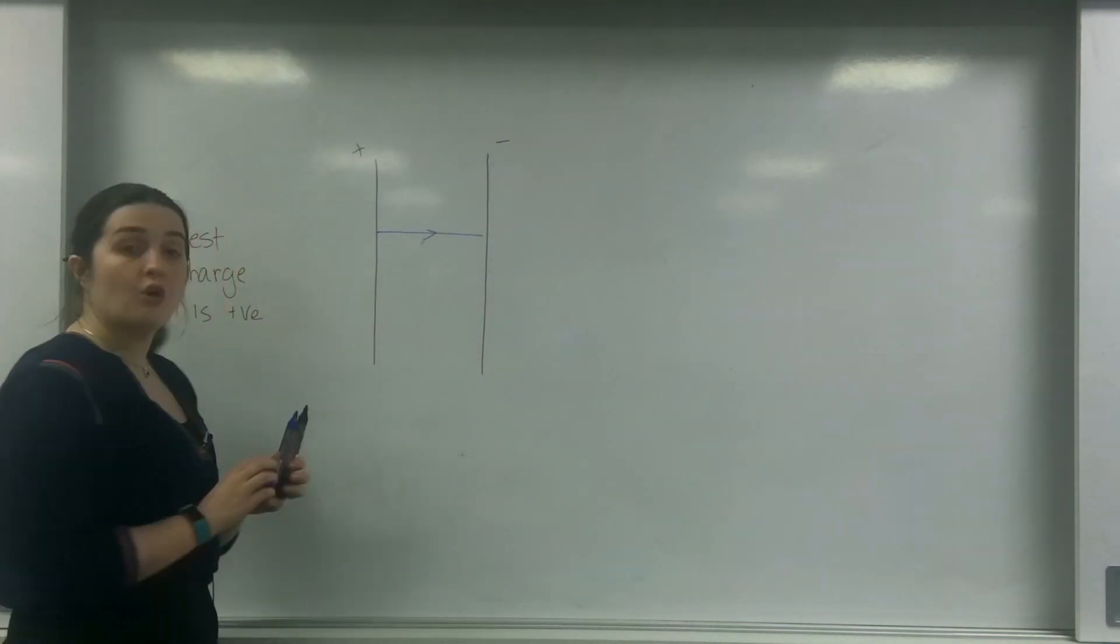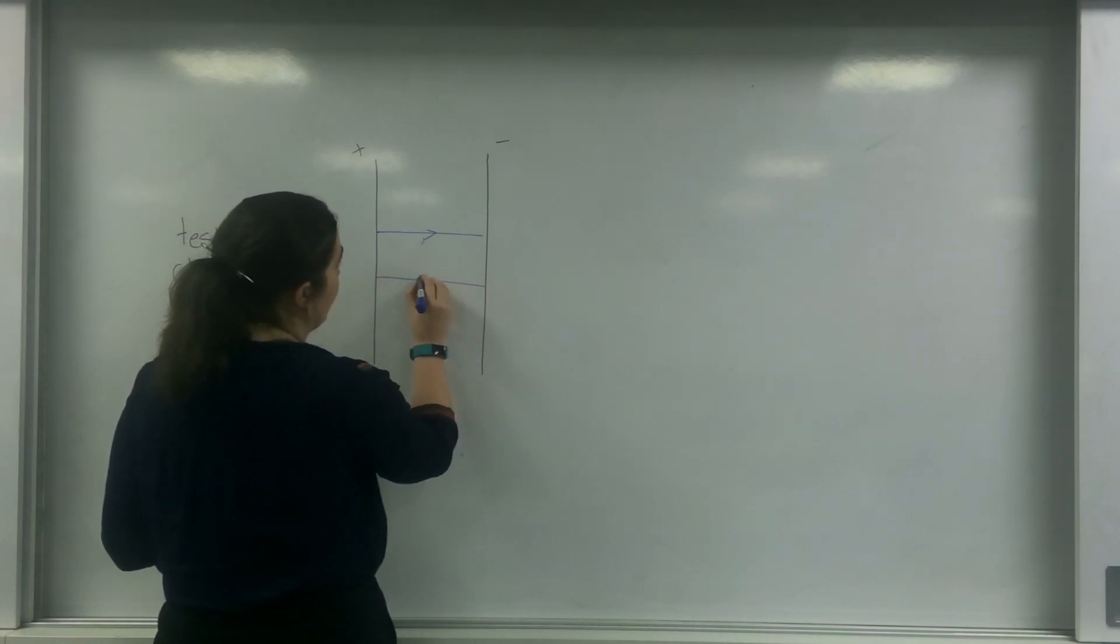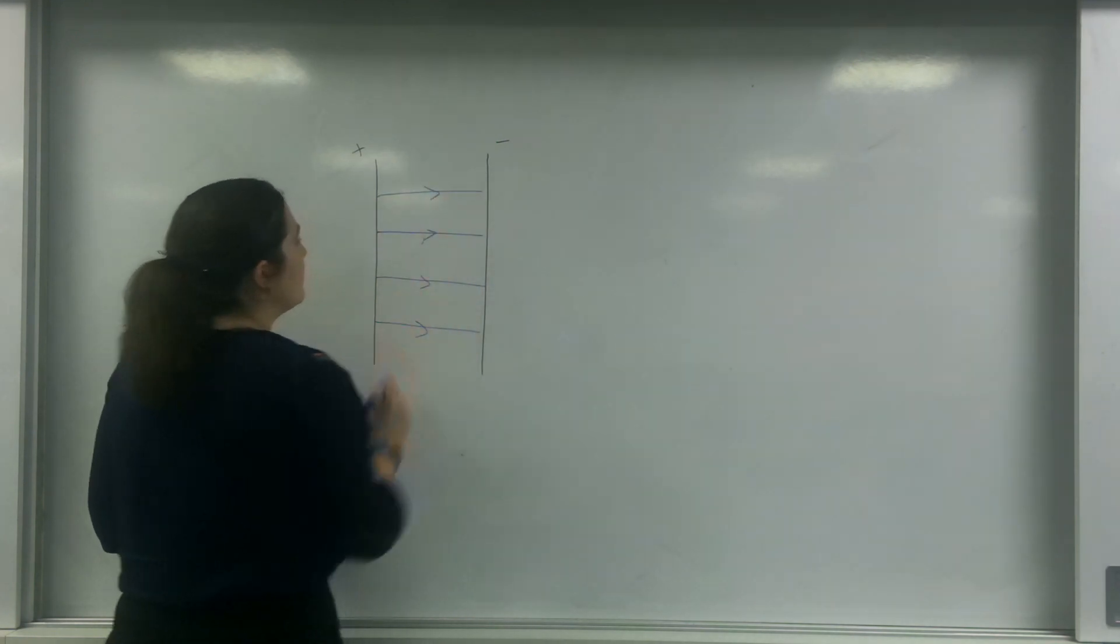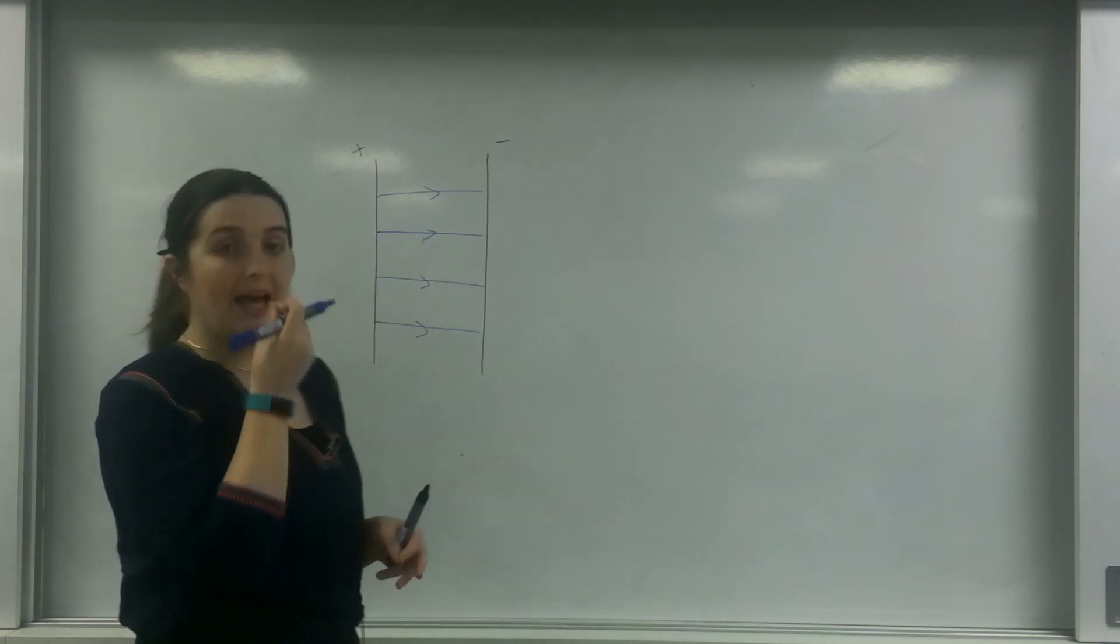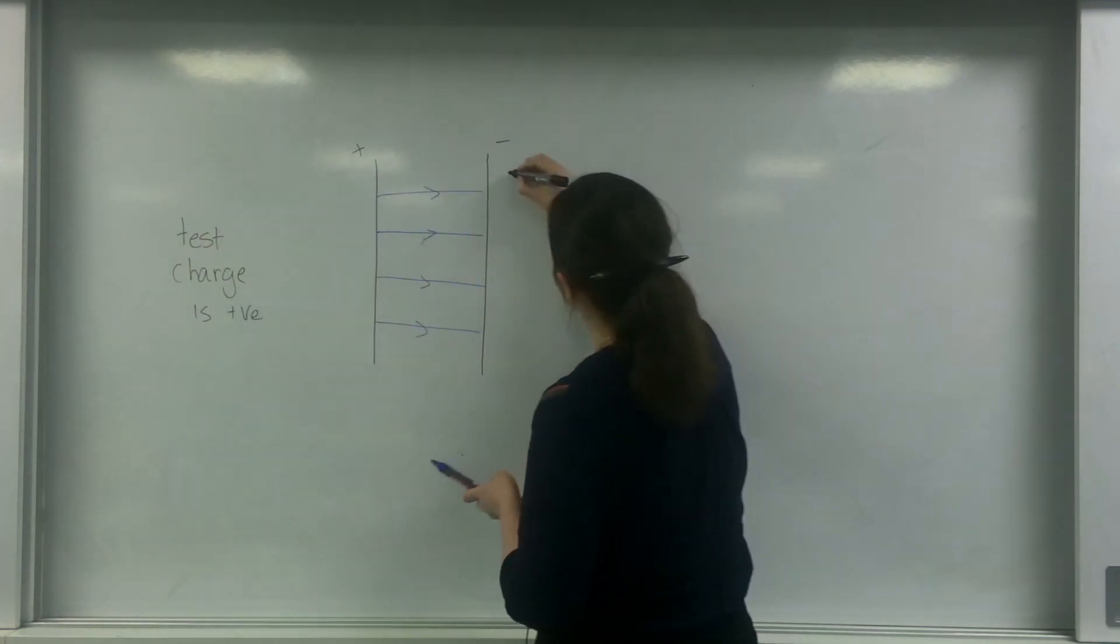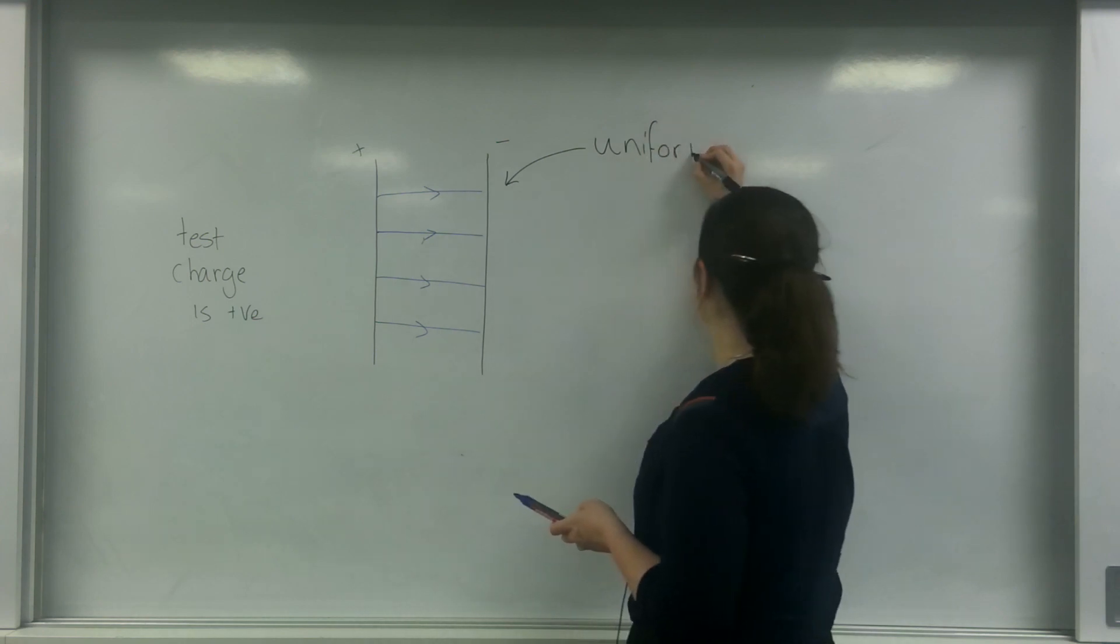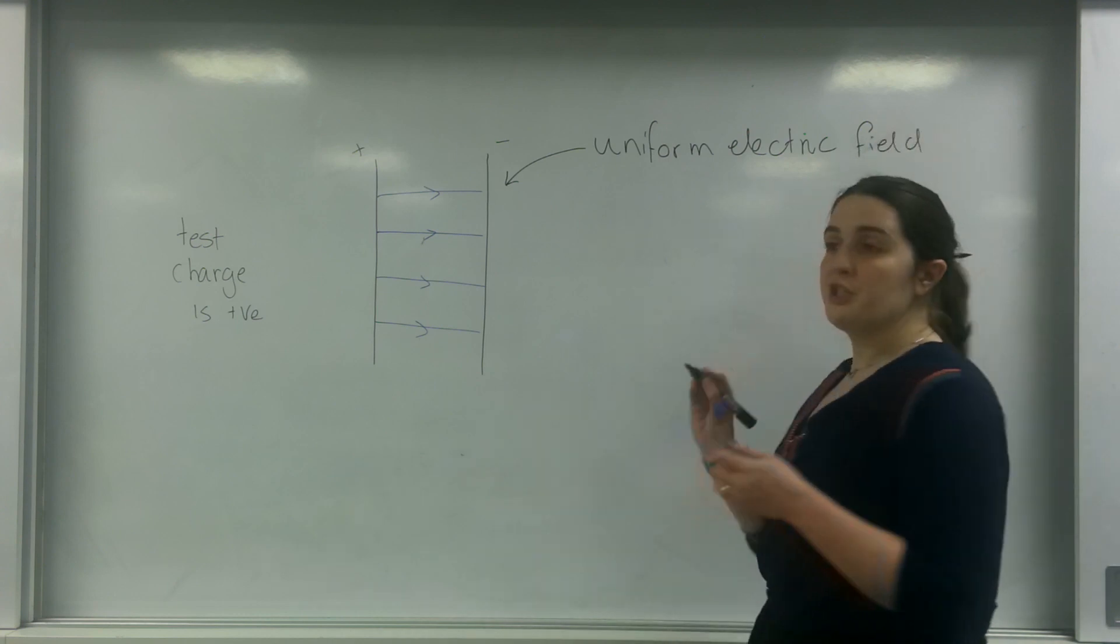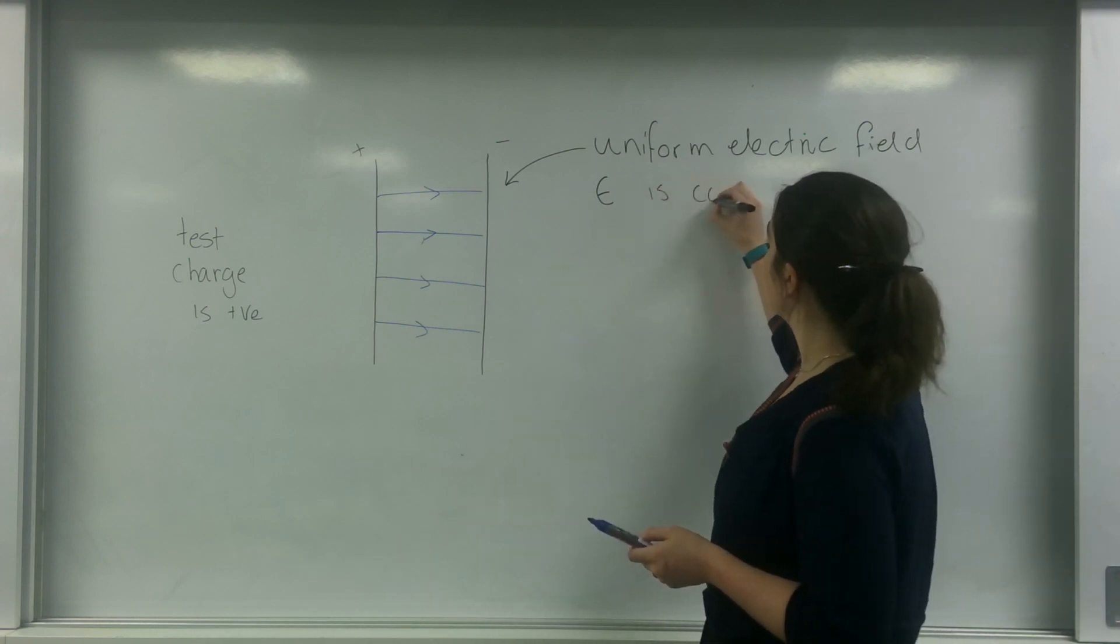If I was to draw a uniform field, I would have something like this. So within this plate, I have a uniform electric field, which means that E, my field strength, is constant.